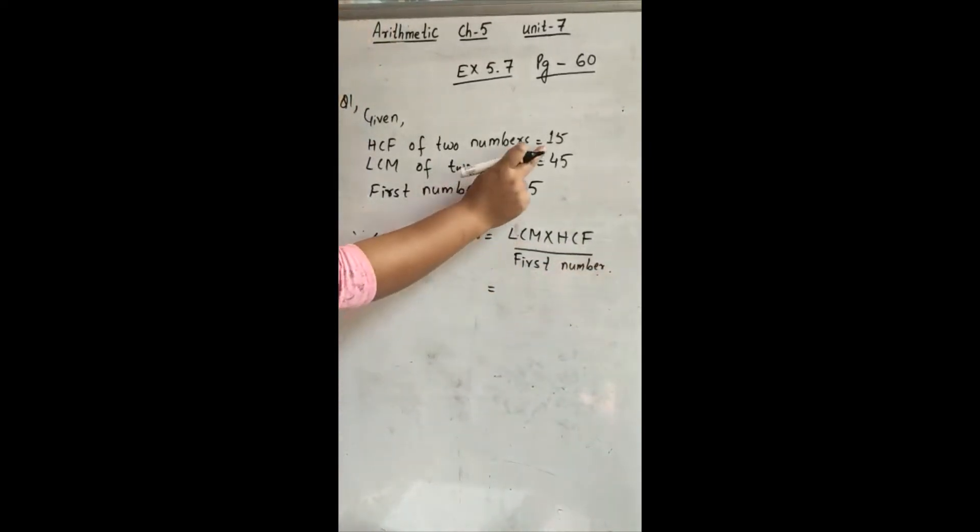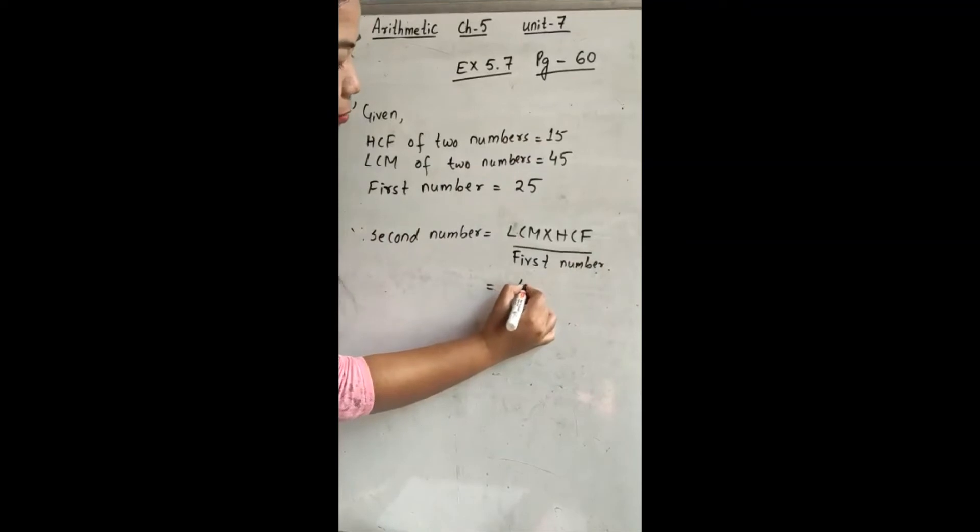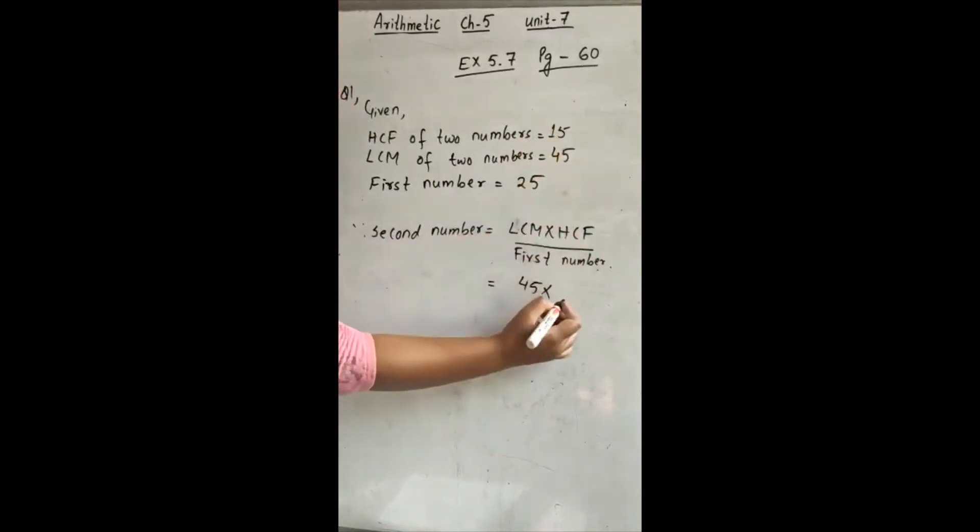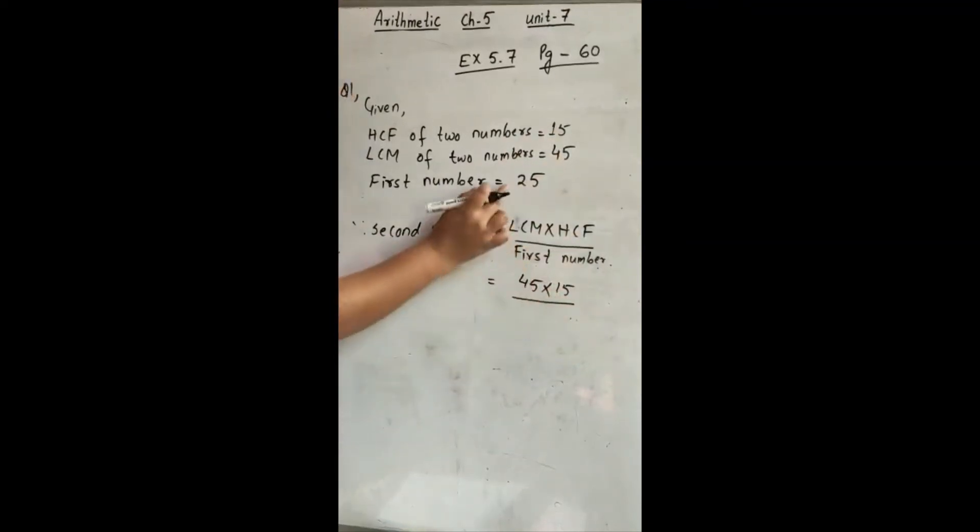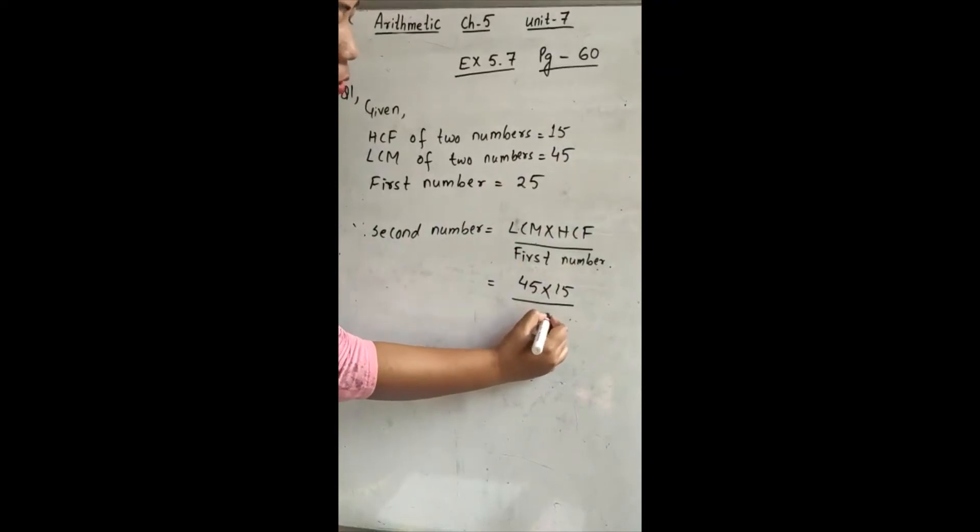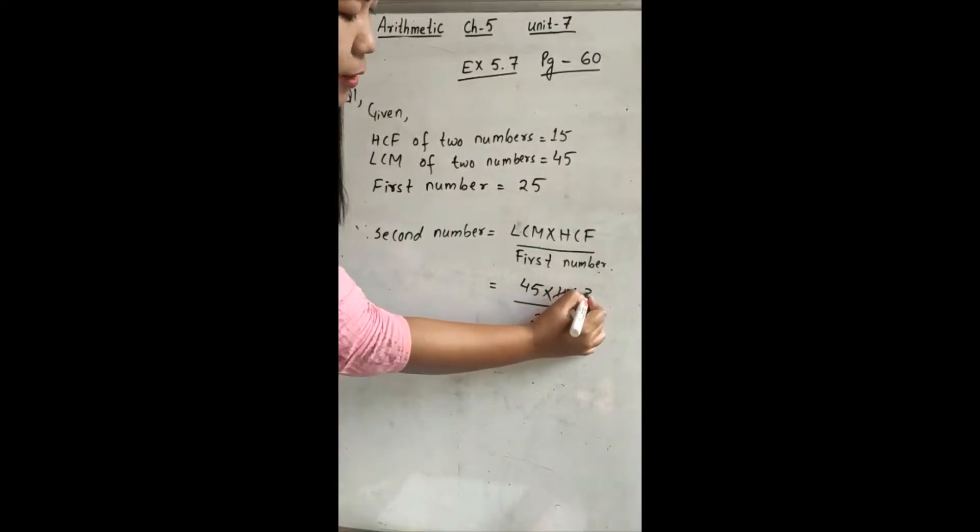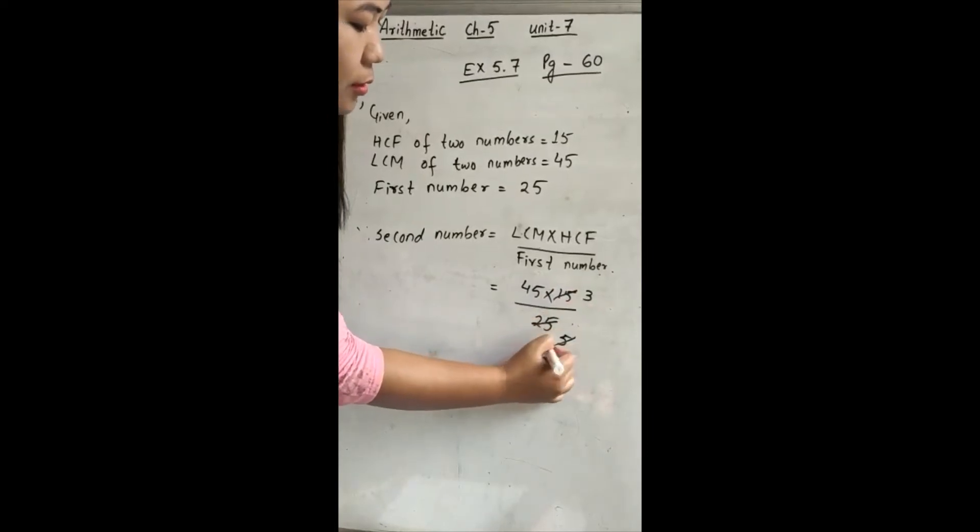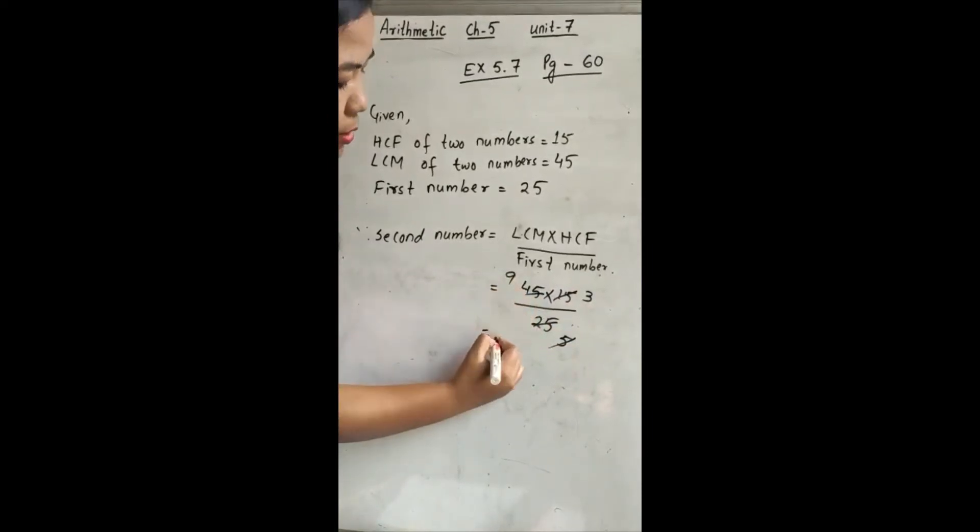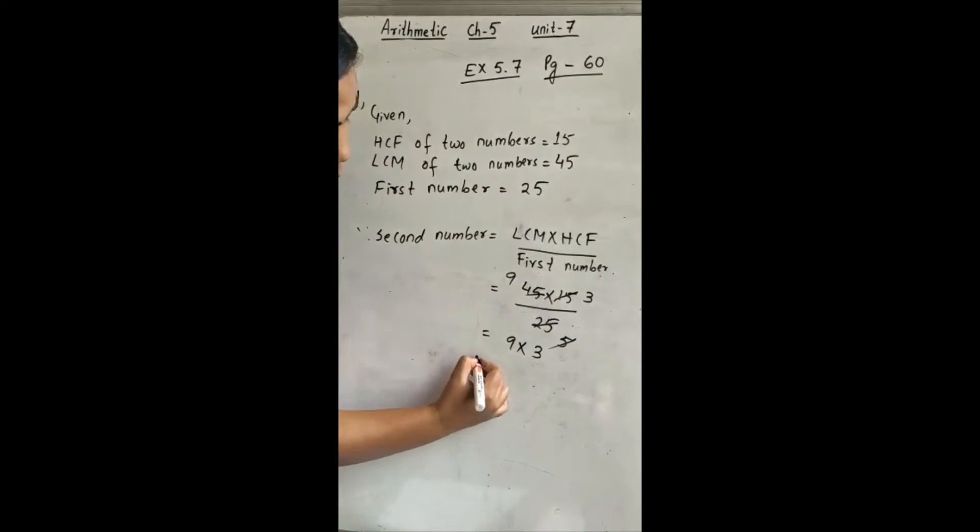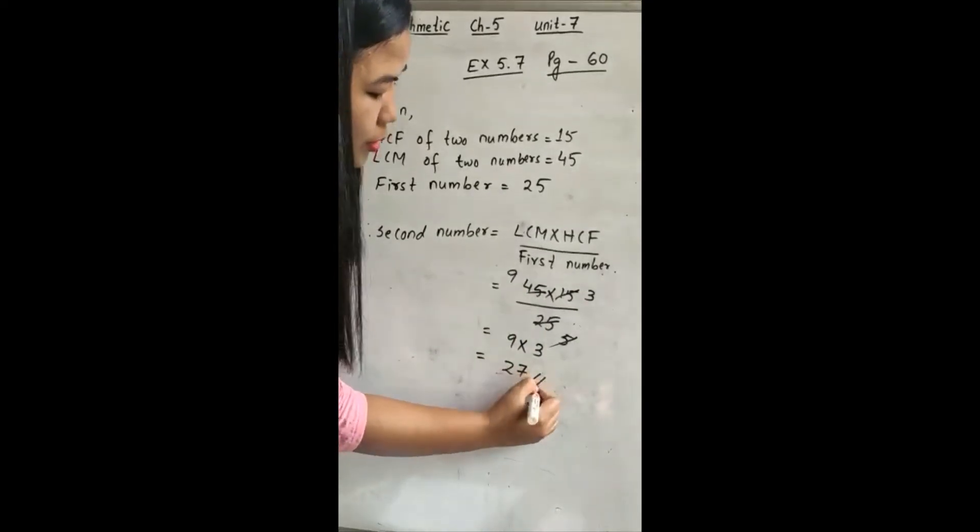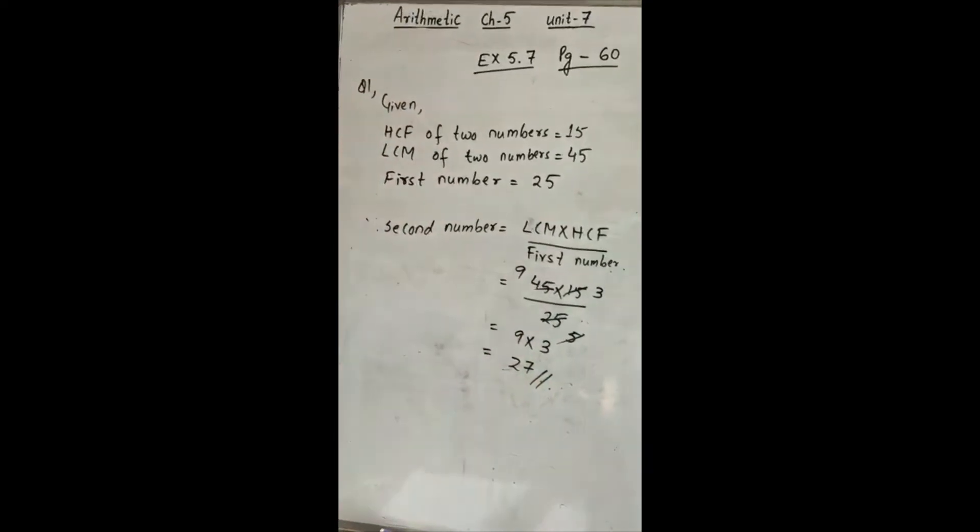Now what is the value of LCM? 45. HCF is 15. And first number is 25. So now you can cut it with 5, 5, 3, 5, 5, 5, 5, 9. What is left? 9 and 3. 9 and 3 is 27. So the second number is 27.